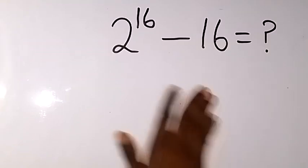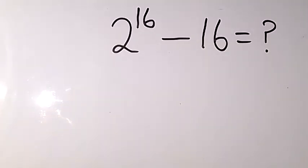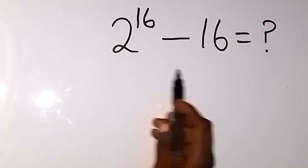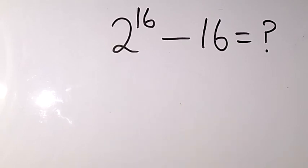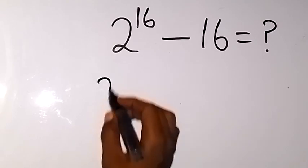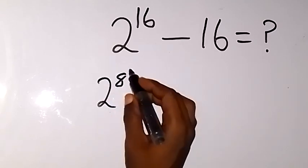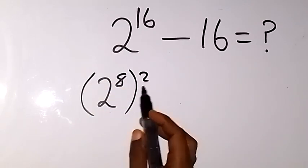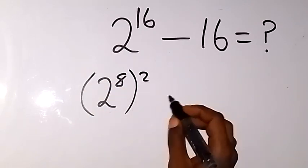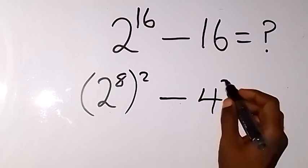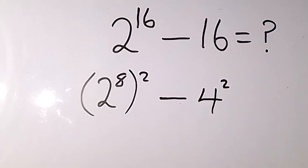Hello, you are welcome. We want to simplify 2 raised to power 16 minus 16. We can rewrite this as 2 raised to power 8, then raised to power 2 — since 2 times 8 gives us 16 — minus 4 raised to power 2, because 4 squared, that's 4 times 4, gives us 16.